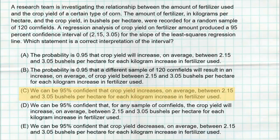The correct answer is C. This question deals with a confidence interval for the slope of a regression line. We're trying to determine how two variables — X being fertilizer and Y being crop yield of a particular type of corn — relate to each other. Crop yield is measured in bushels per hectare. The slope from our sample is in the middle of this interval; we add or subtract our margin of error and get the interval where we believe the true population slope lies. We're 95% confident that the crop yield increases on average 2.15 to 3.05 bushels per hectare for each kilogram increase in fertilizer.